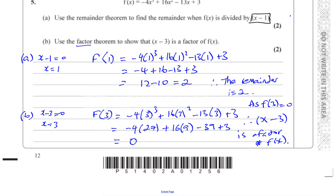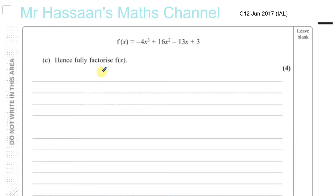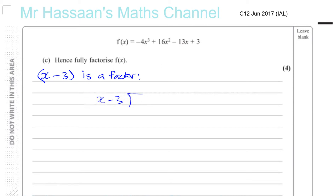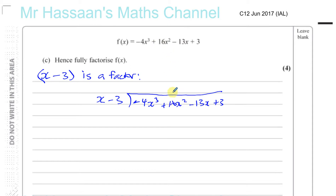Then it says: hence fully factorize f of x. So we know that x minus 3 is a factor — we just showed this in the last part of the question. One method we could use is algebraic long division. So we can say x minus 3 into minus 4x cubed plus 16x squared minus 13x plus 3. You've got to be careful when doing algebraic long division — if any x terms are missing, for example if the x squared term wasn't there, you would have to write plus 0x squared. Fill it in with a 0. Otherwise it makes everything out of place. In this case we don't have to worry because everything's there: x cubed, x squared, x, and the constant.